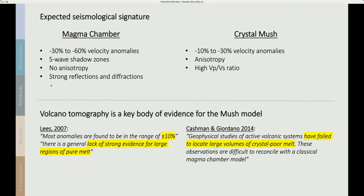My approach to this is from the point of view of seismology and I'm interested in the seismological signature of these two models. For the magma chamber model we expect low velocity anomalies that are very strong of minus 30 to minus 60 percent, s-wave shadow zones, little or no anisotropy, strong reflections and diffractions. For the crystal mush model we expect weaker anomalies of minus 10 to minus 30 percent, some anisotropy and a high Vp/Vs ratio.